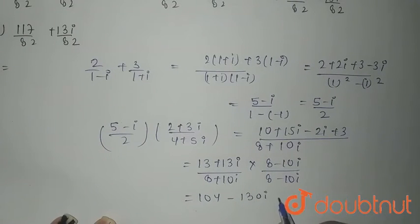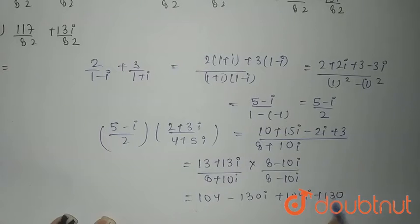113 into 8 is nothing but plus 104 iota plus 130 divided by 8 the whole square minus 10 iota the whole square.